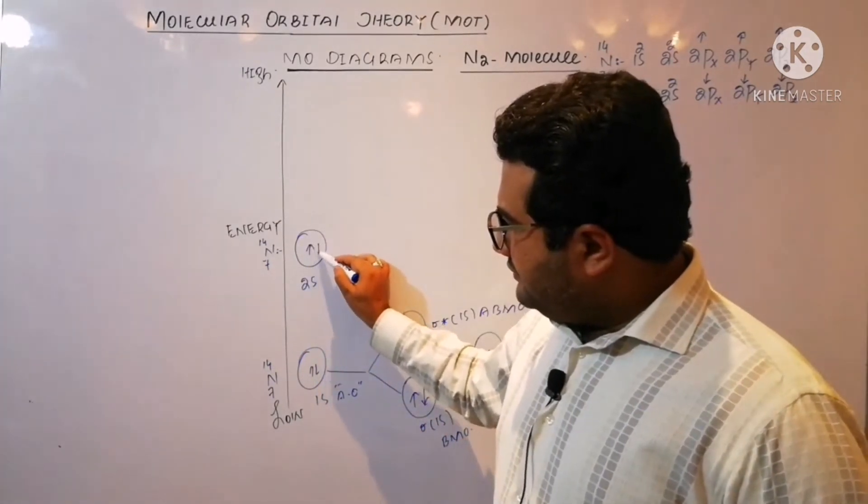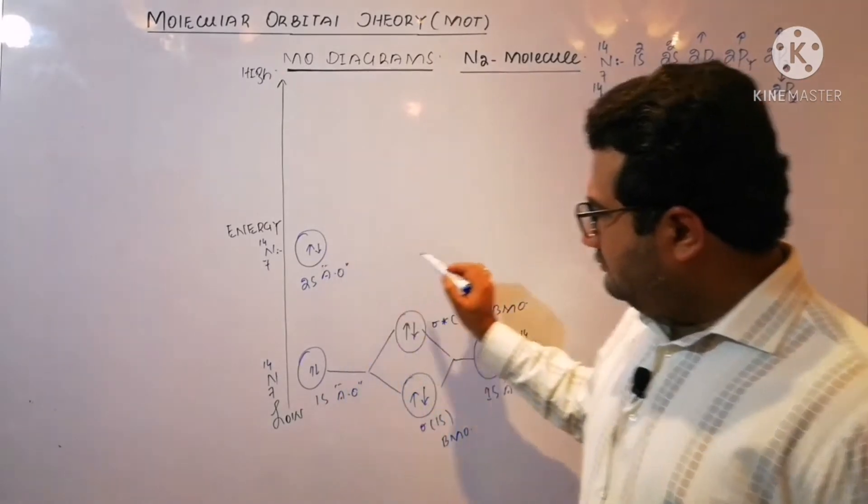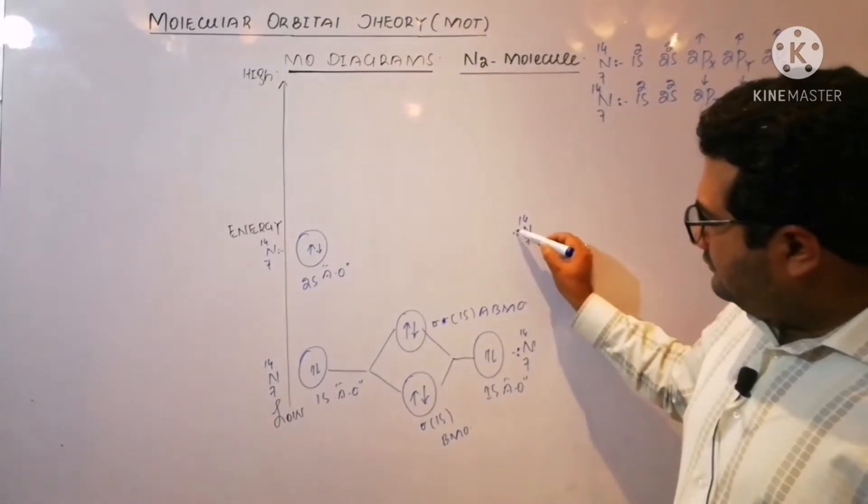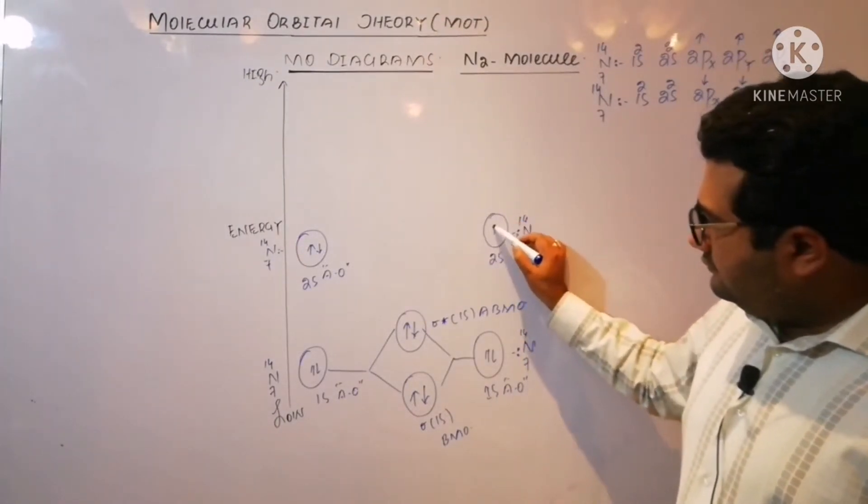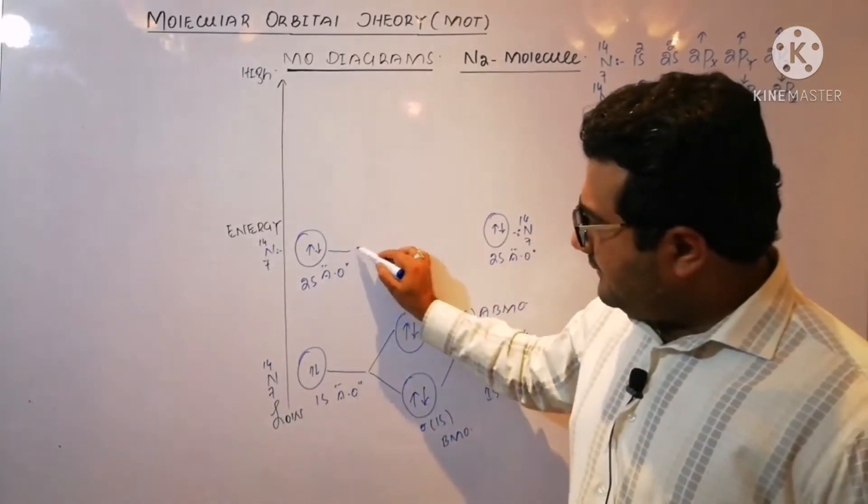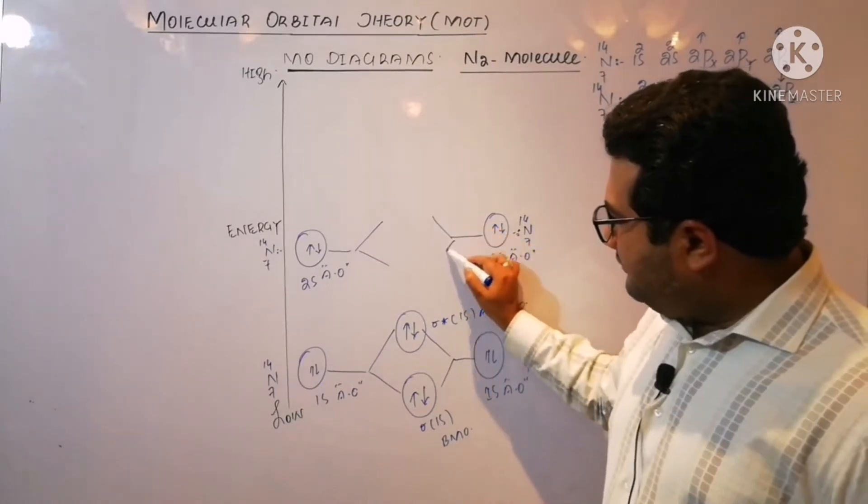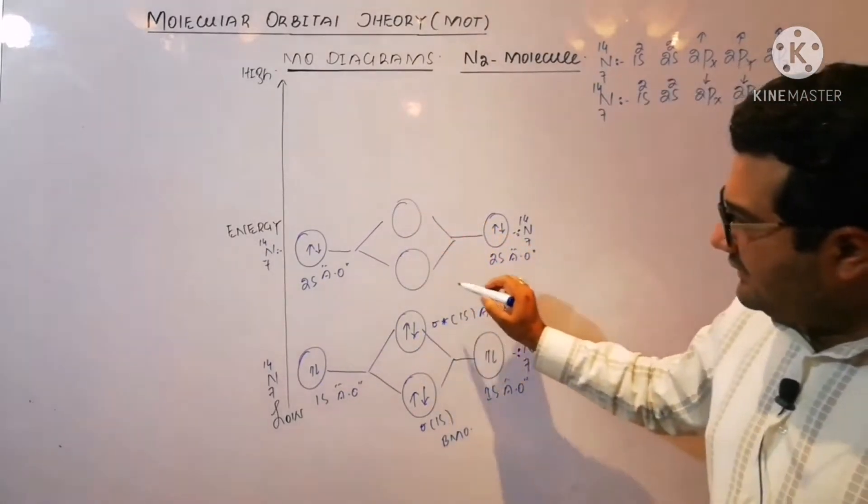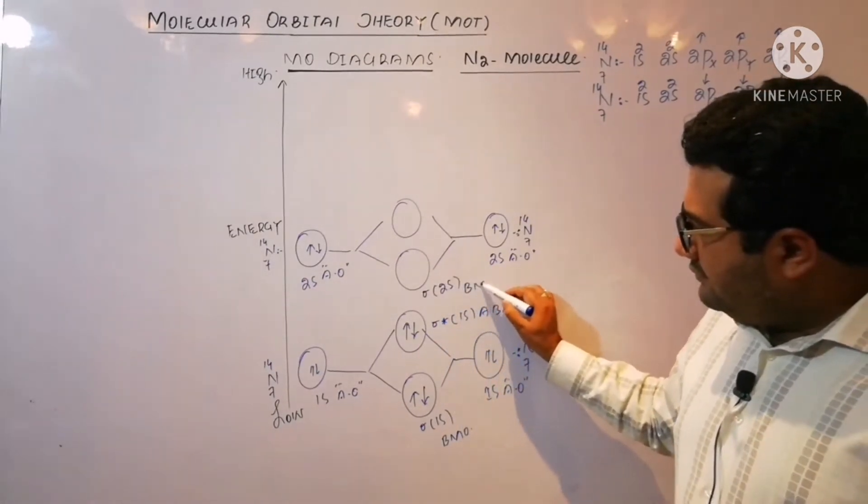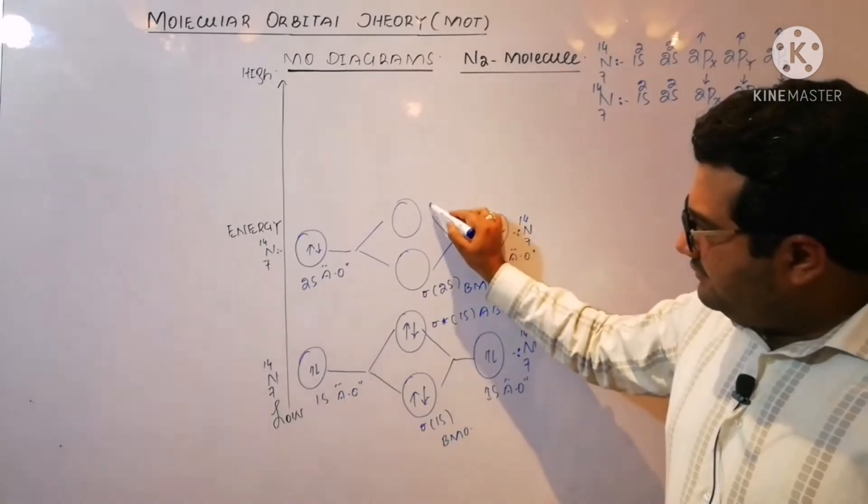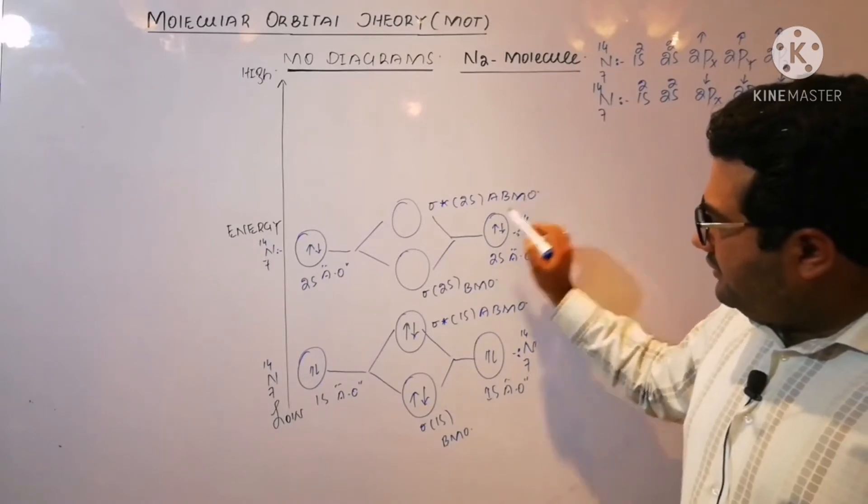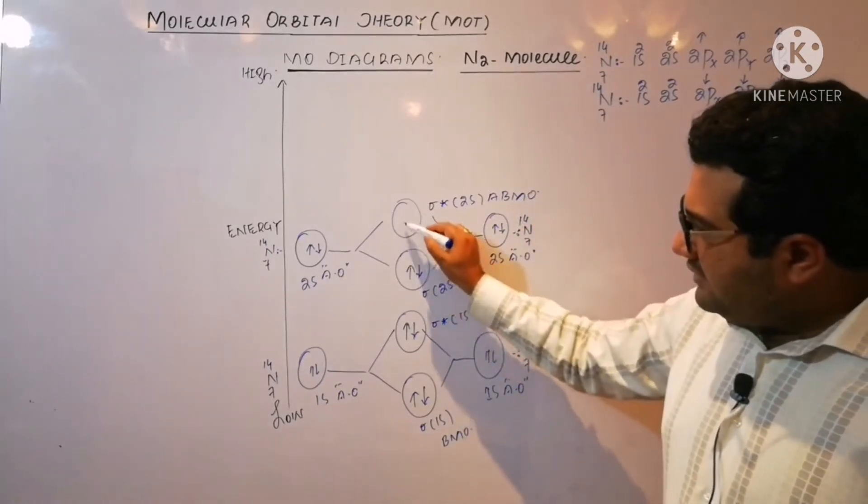1s² atomic orbital, 2s² atomic orbital. They will overlap to form two molecular orbitals: sigma 2s bonding molecular orbital and sigma star 2s anti-bonding molecular orbital. They will also be complete.